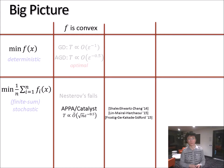But fortunately, there exists the so-called APPA/Catalyst reduction, which achieves this rate in root N divided by root epsilon. So it turns out to be optimal, up to a few log factors, among the class of first-order methods.